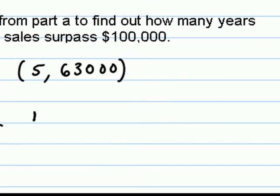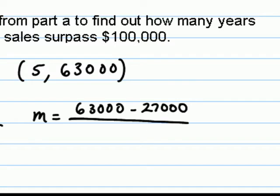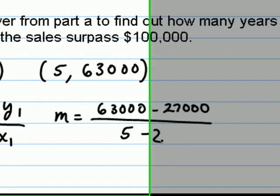And given the two points we have, we could say the slope is equal to $63,000 minus $27,000 divided by 5 minus 2.